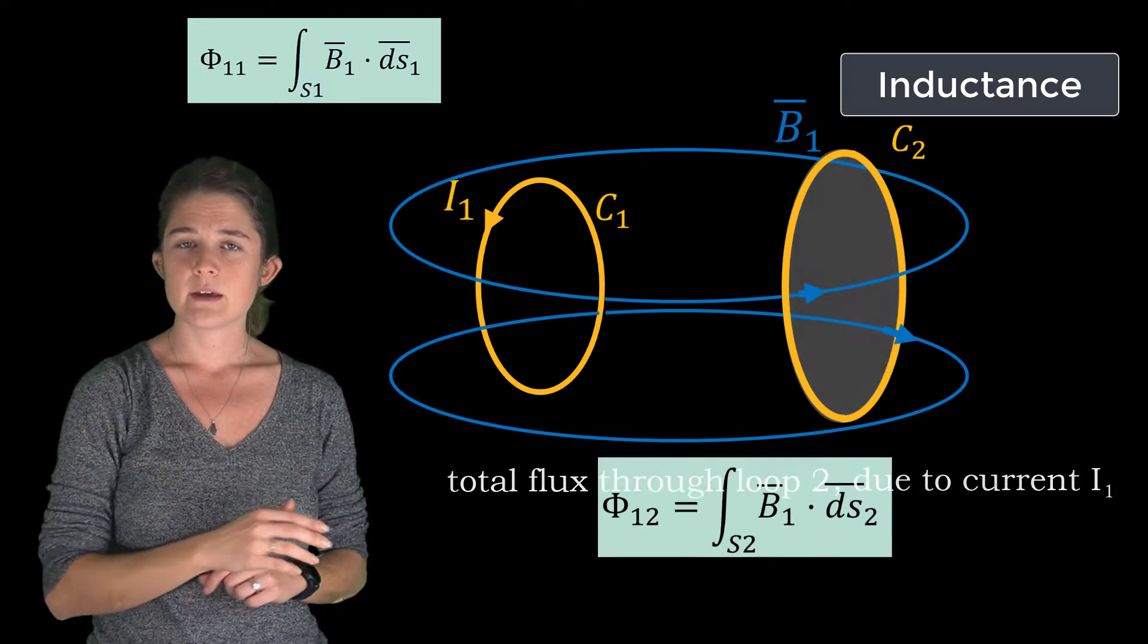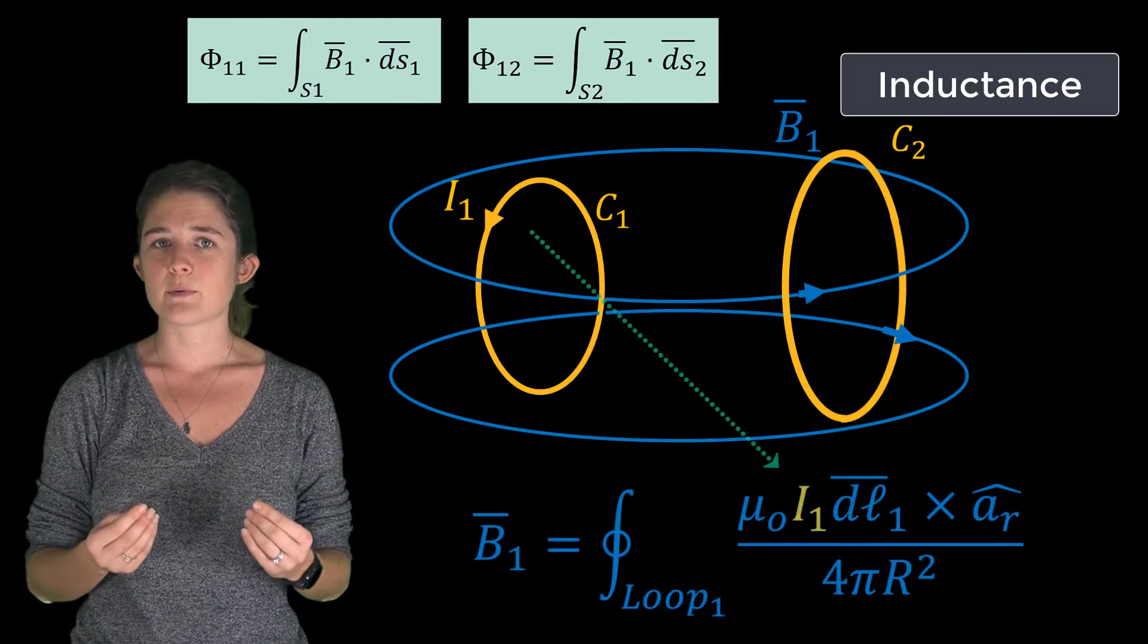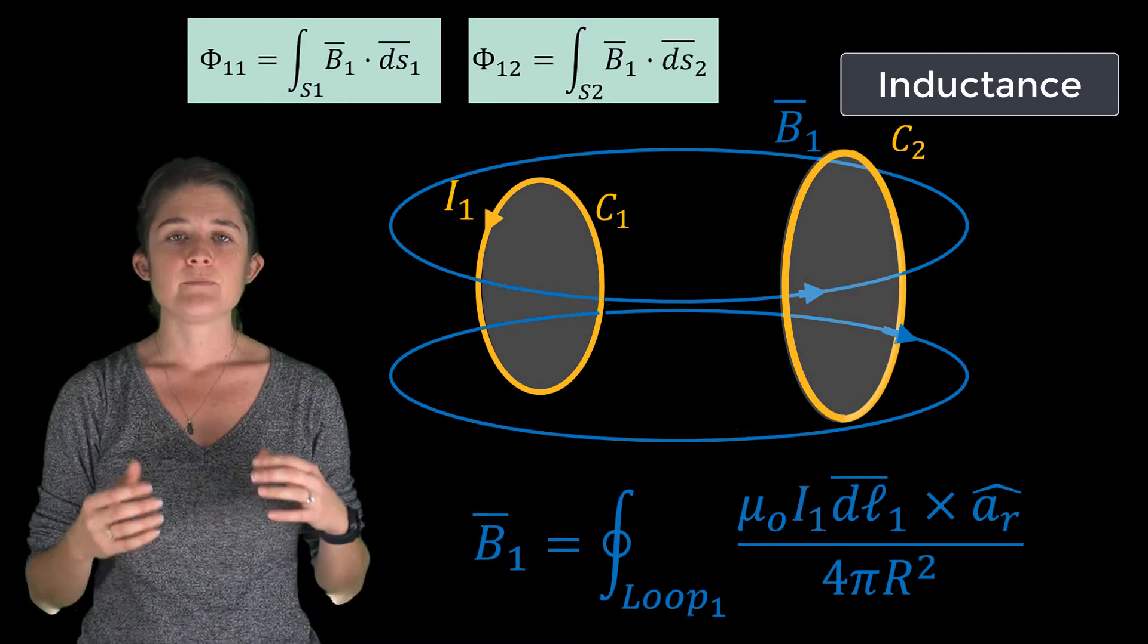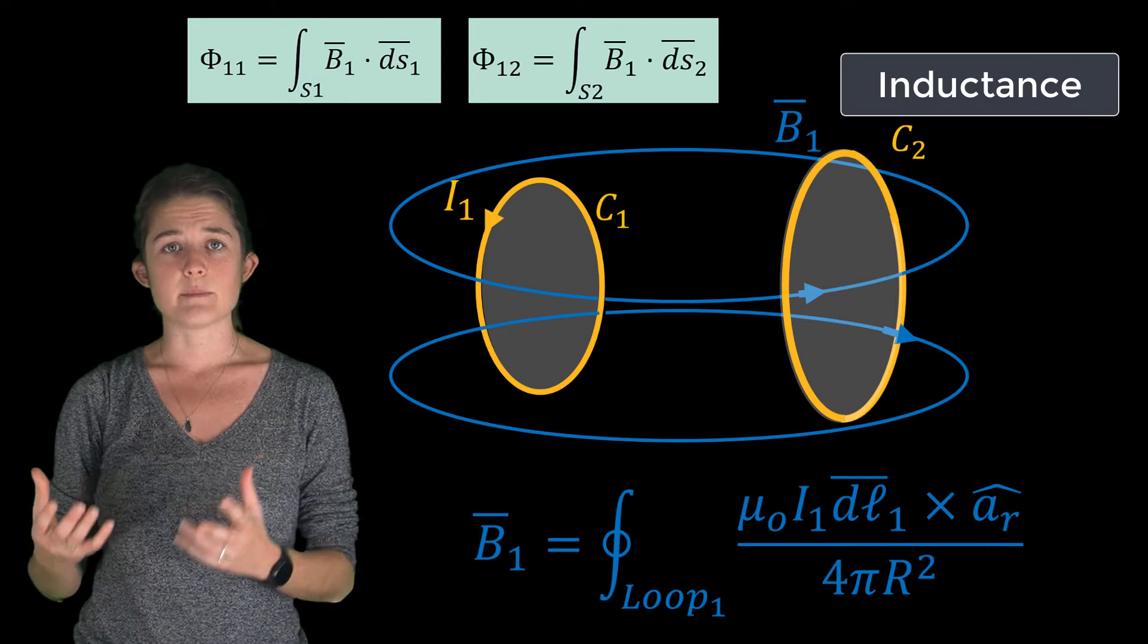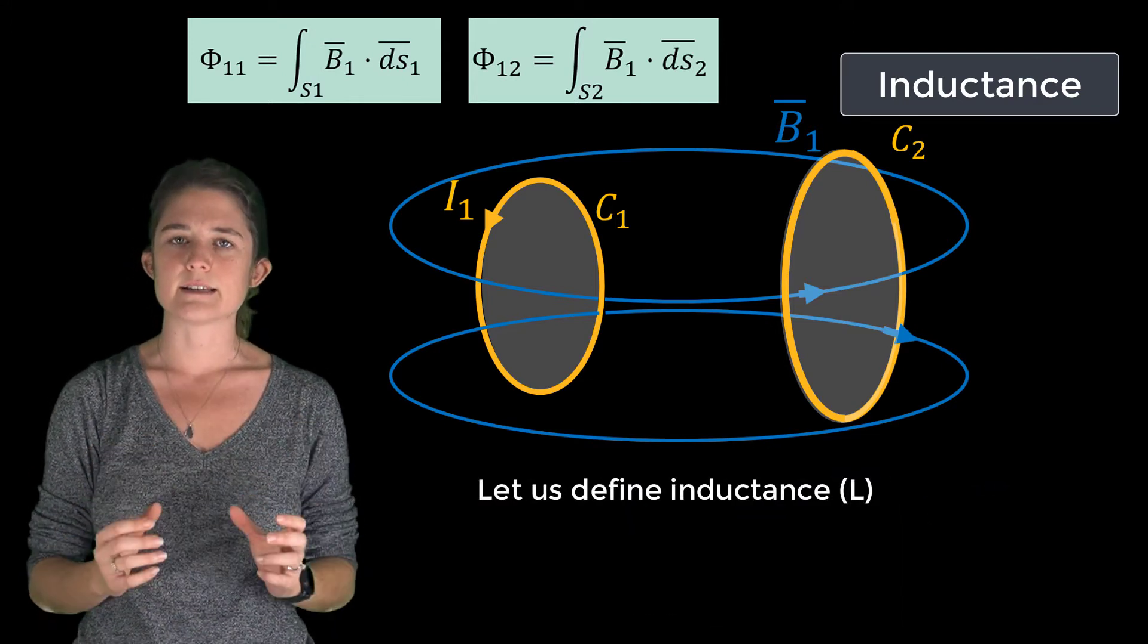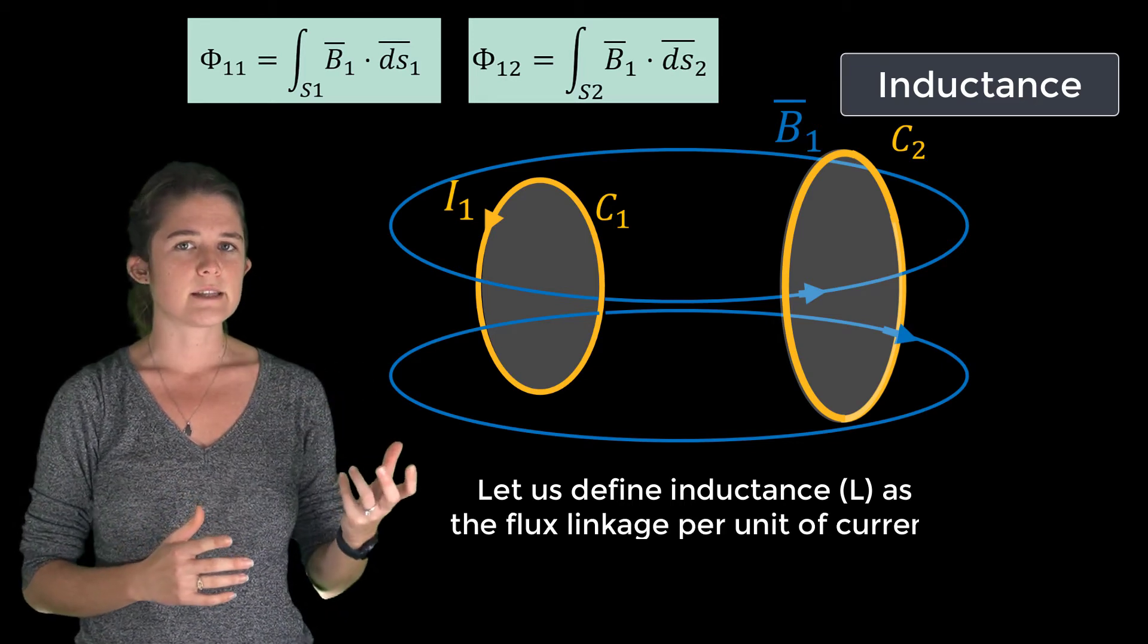Now, the strength of the magnetic flux density is directly proportional to the current, but the percentage of it that couples with each of the loops is a product of the geometry and positioning of the loops. Let us then define inductance, a property of the geometry and positioning of the loops, as the flux linkage per unit of current.